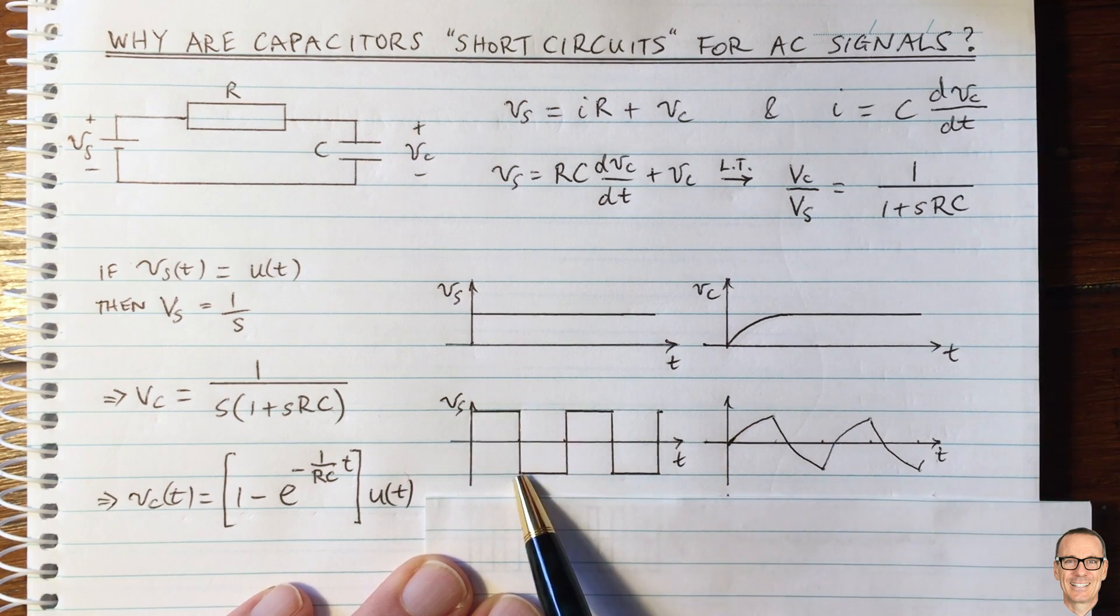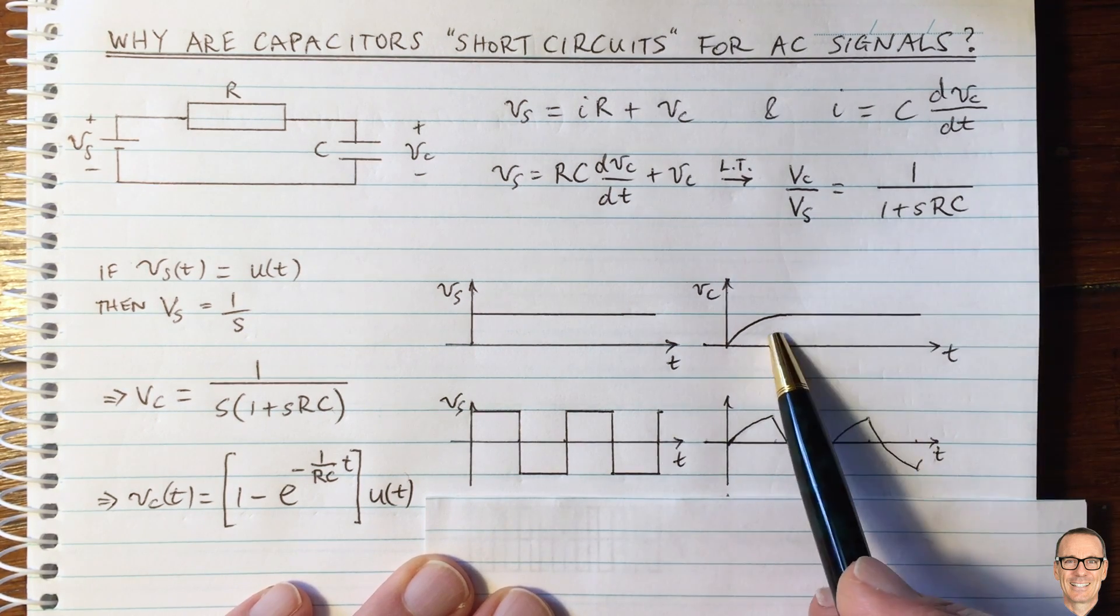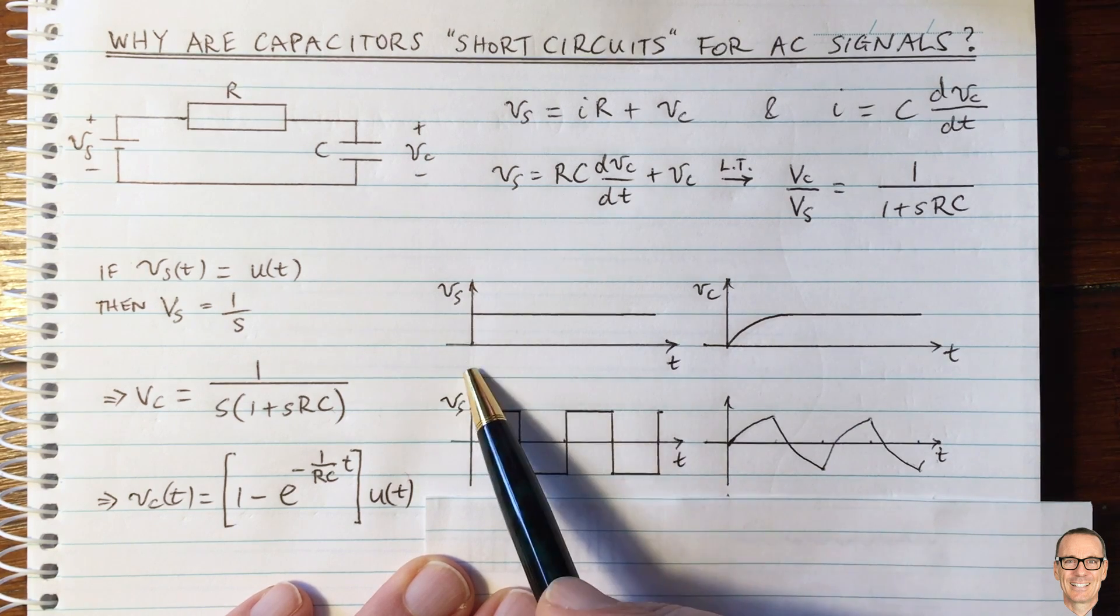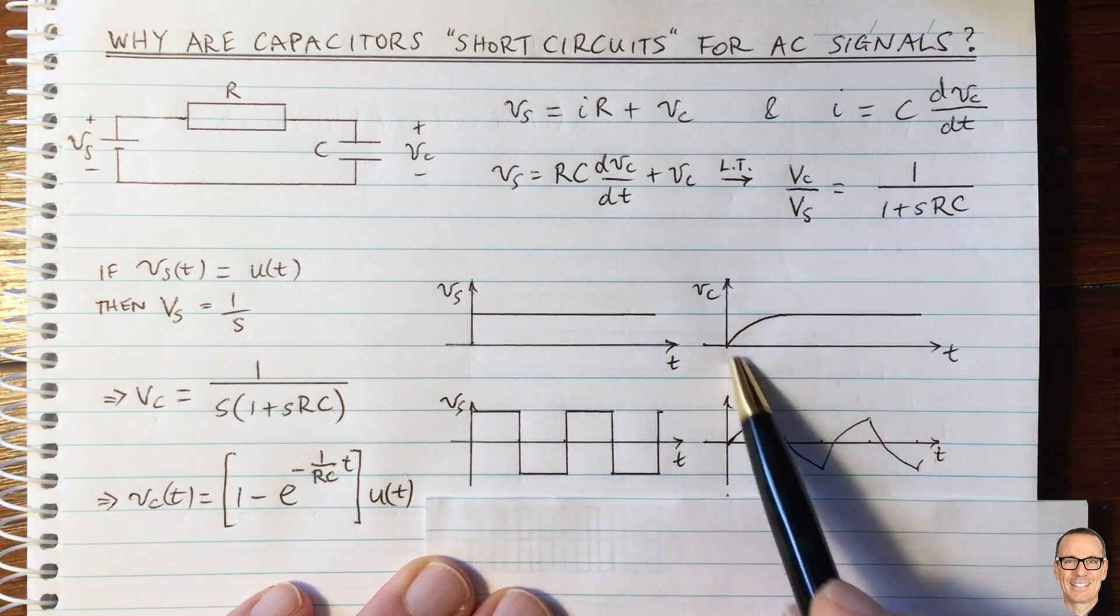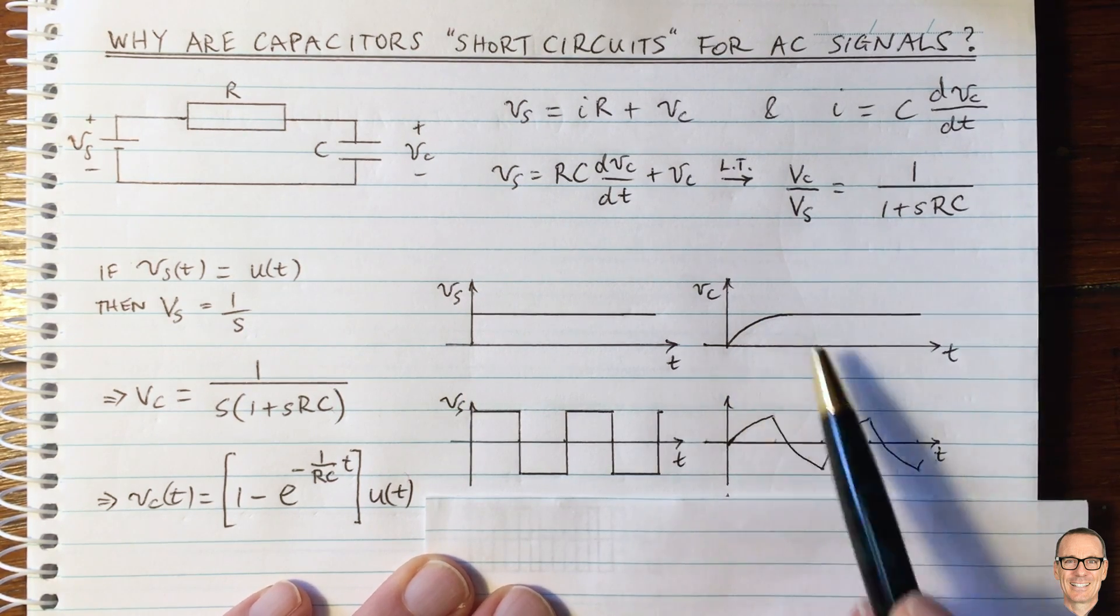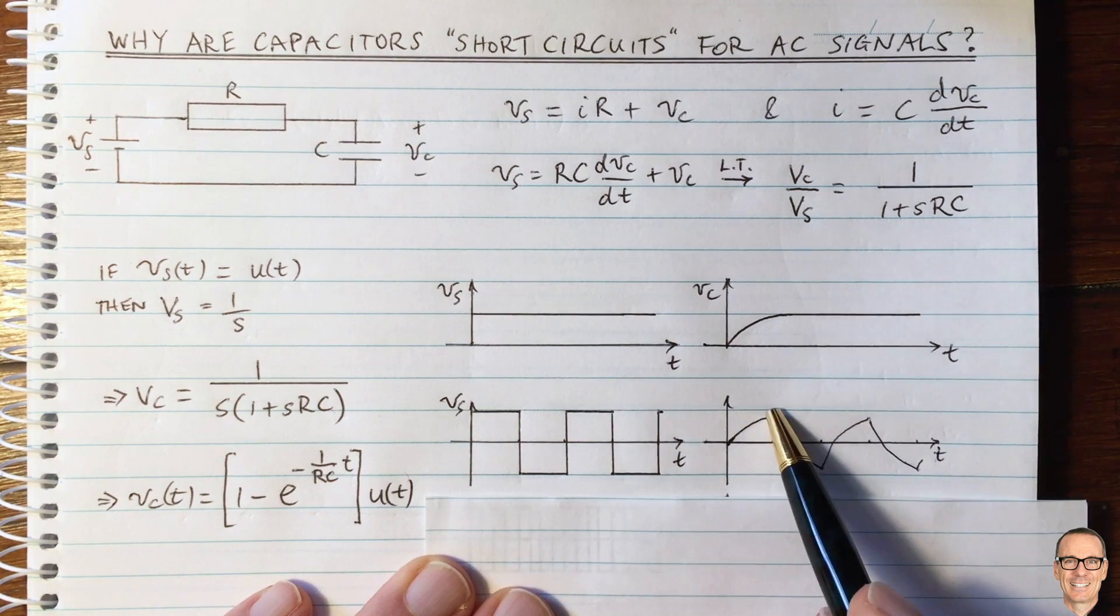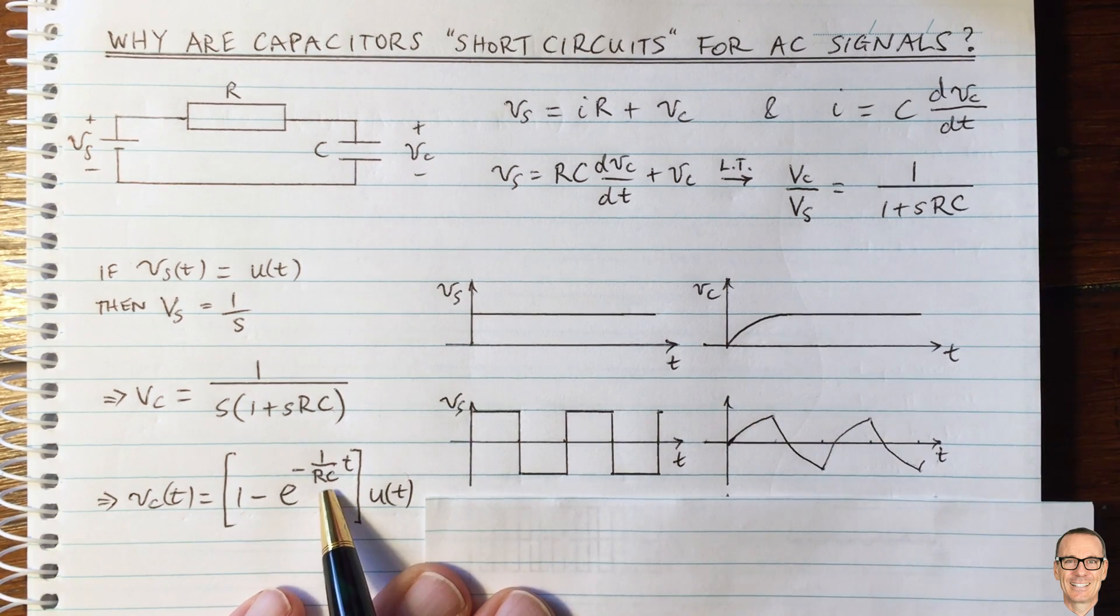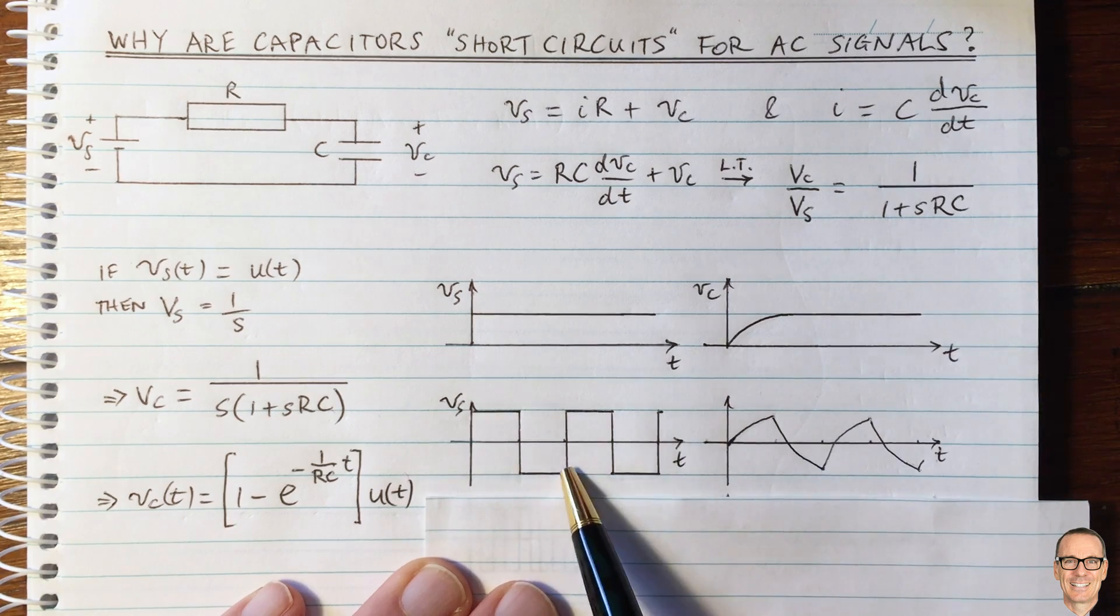When it suddenly jumps back down, well, it's just going to be the inverse of this effect because the negative input would give a negative output. So in that case, the capacitor voltage is going to start ramping down again, according to this exponential.